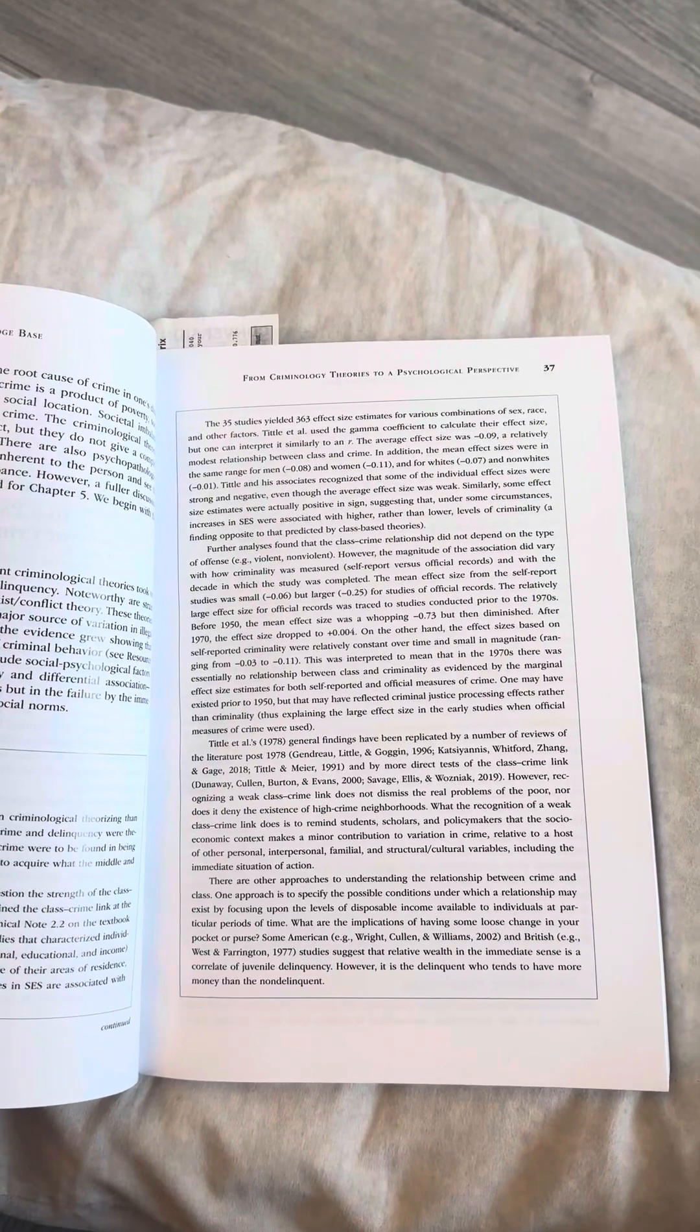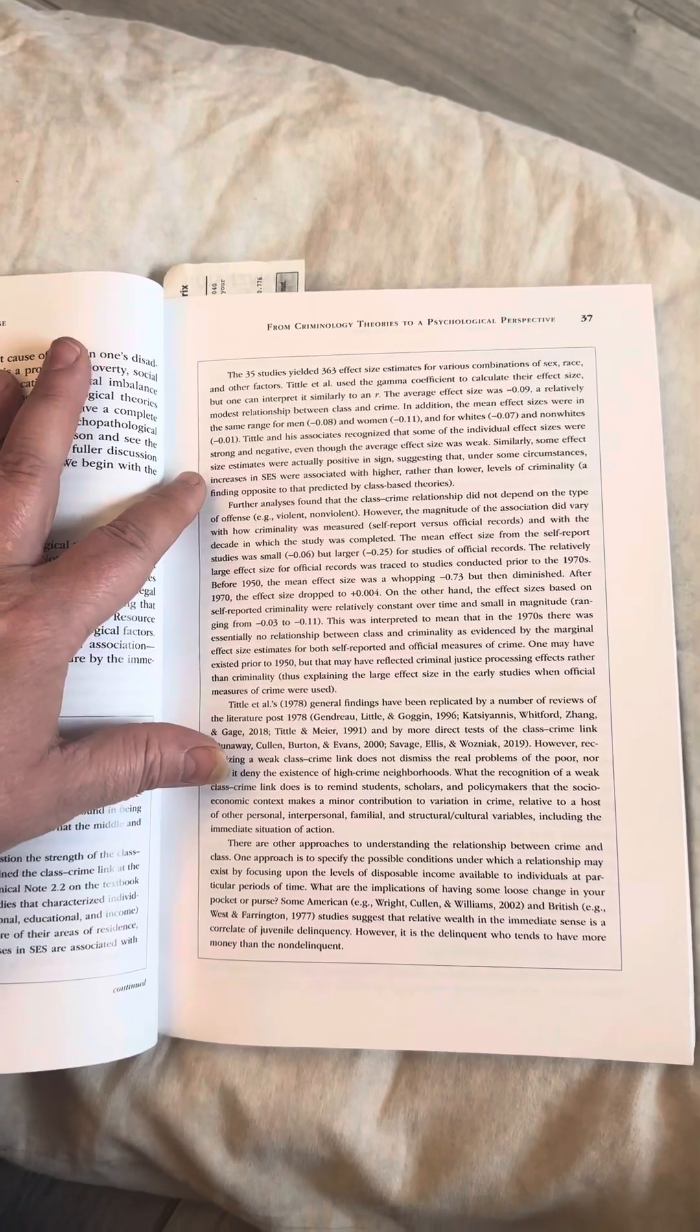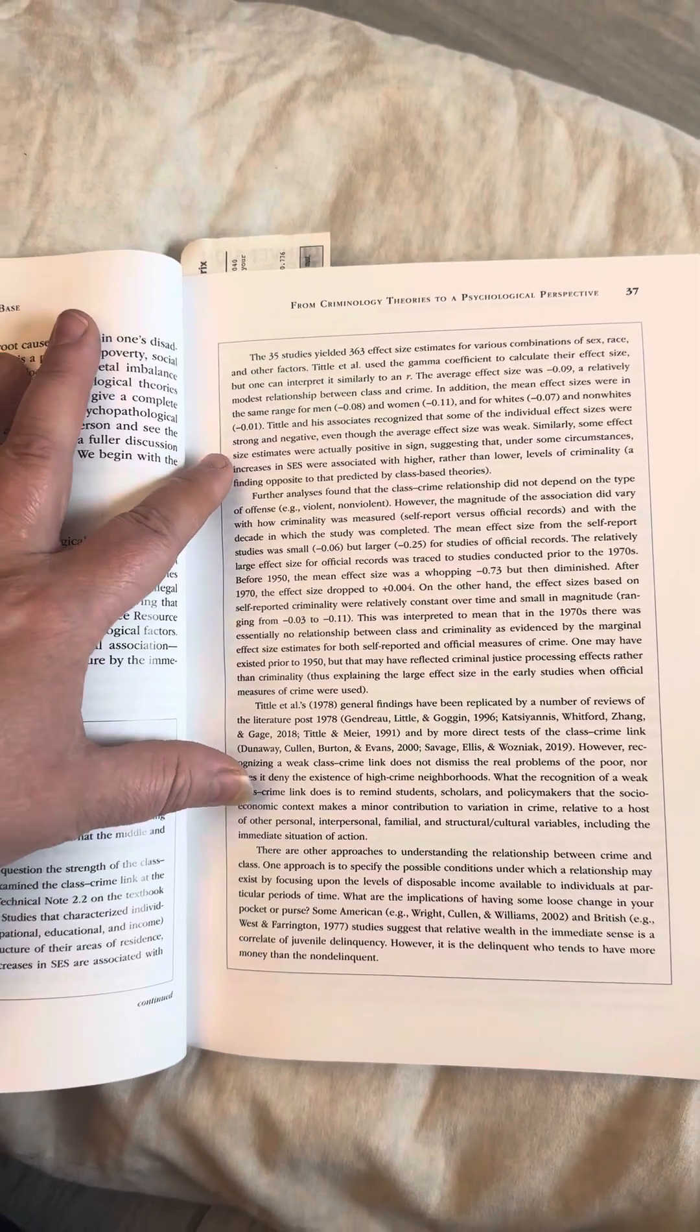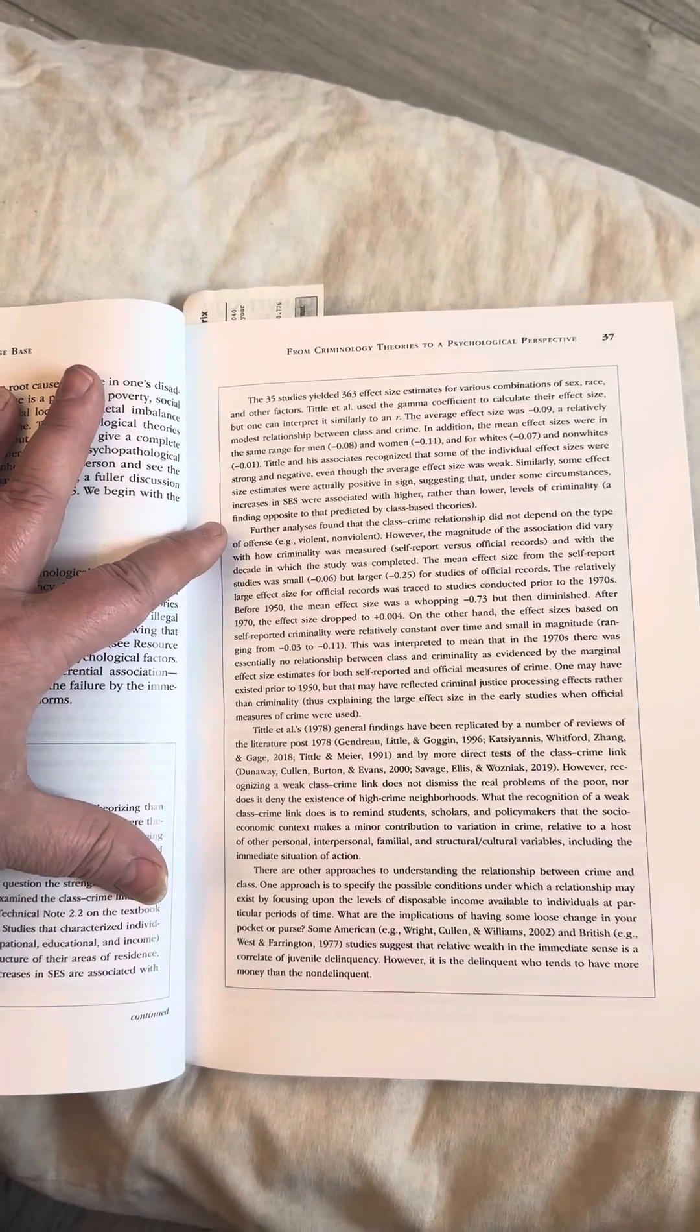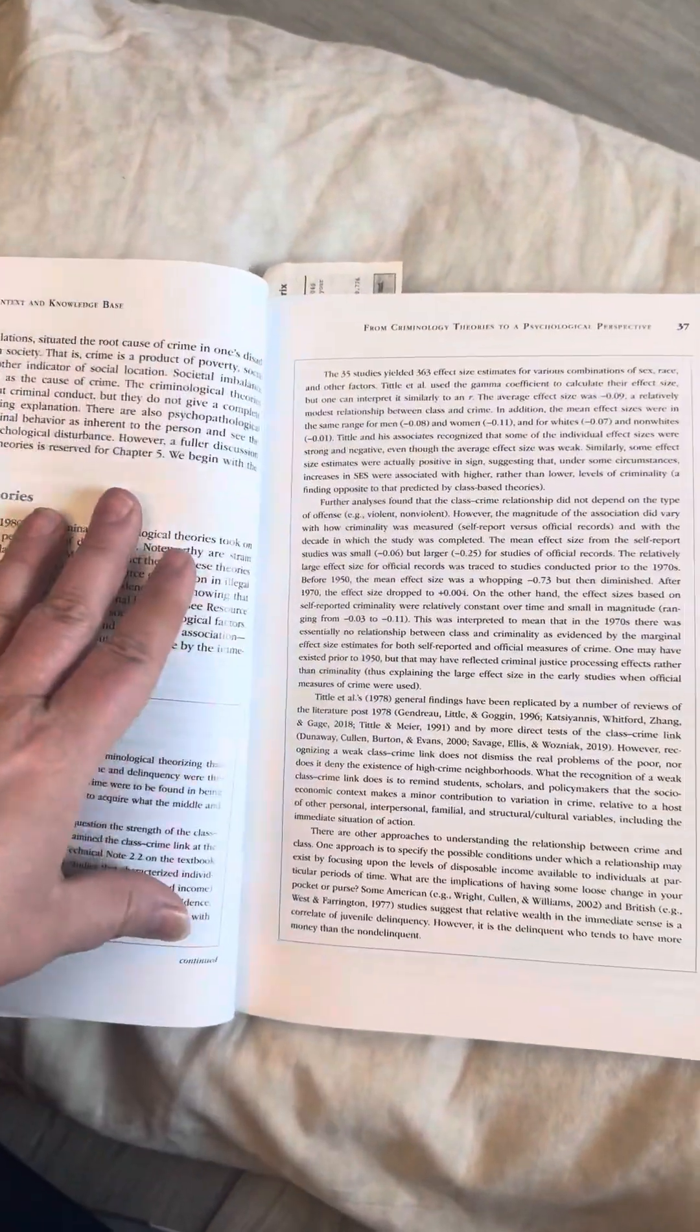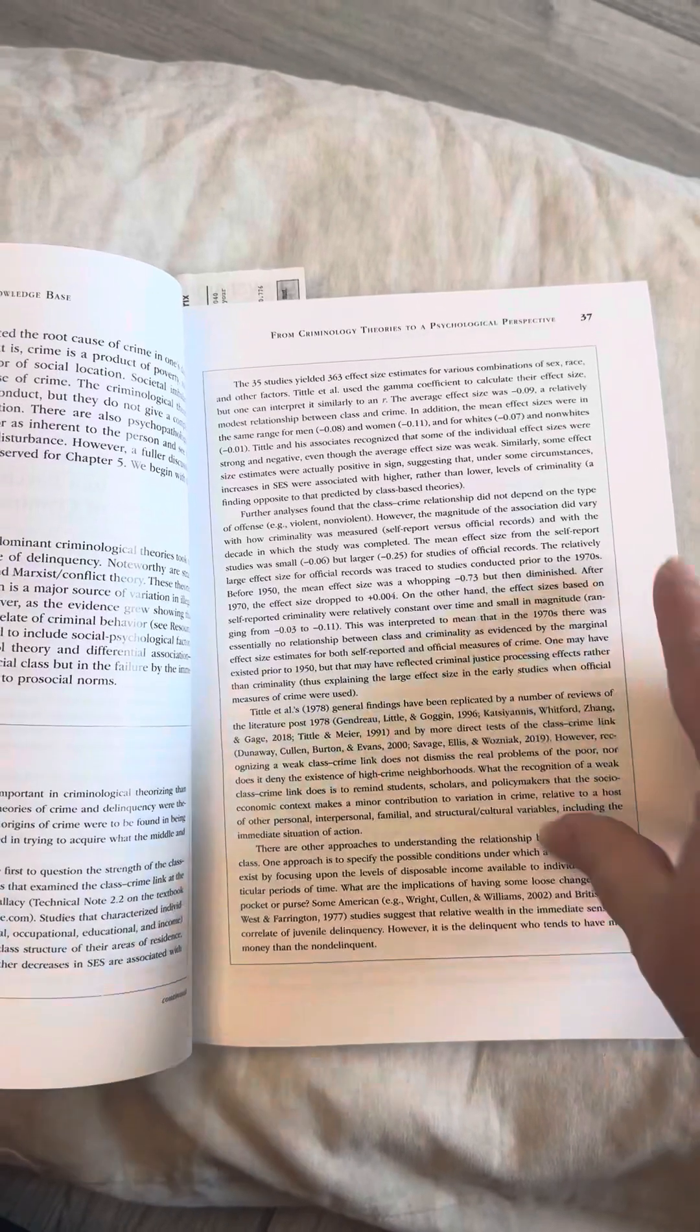In addition, the mean effect sizes were in the same range for women and whites and non-whites. Tidal and his associates recognized that some of the individual effect sizes were strong and negative, even though the average effect size was weak. Similarly, some effect size estimates were actually positive in sign, suggesting that under some circumstances increases in SES were associated with higher rather than lower levels of criminality, a finding opposite to that predicted by class-based theories.